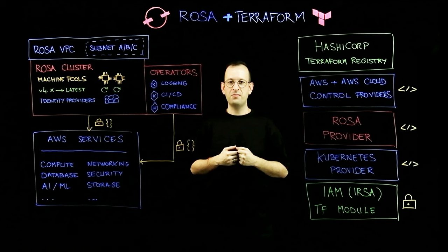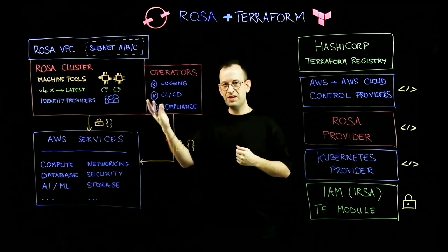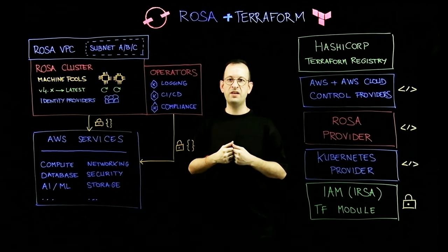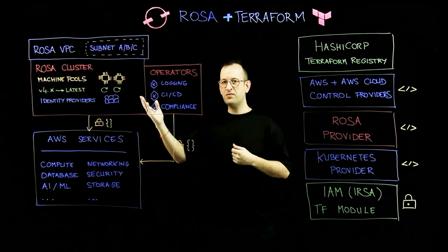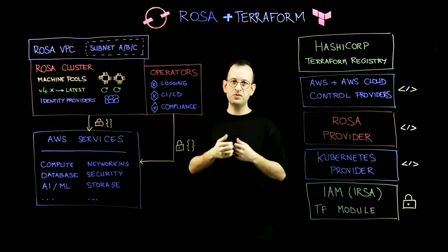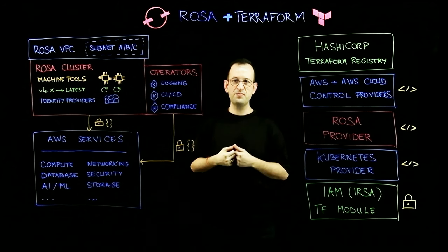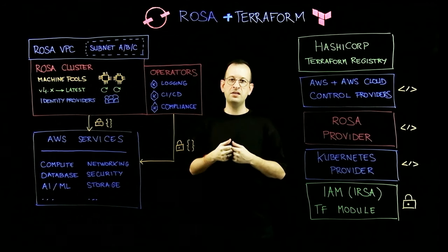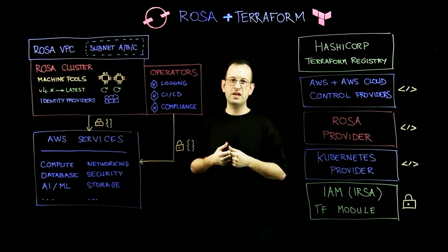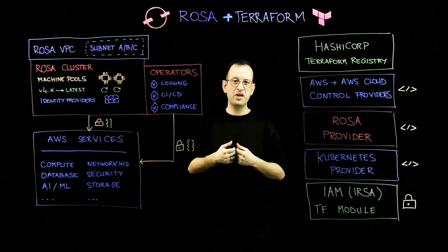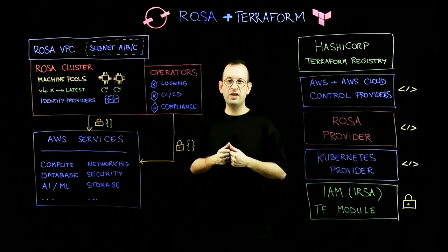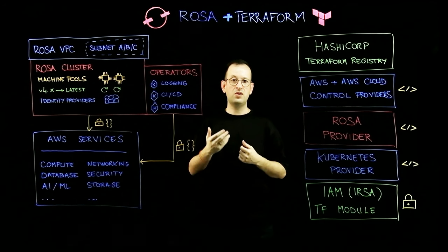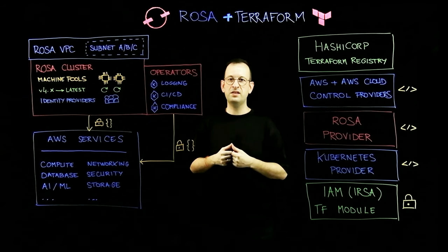From there you can plan for upgrades — for example going from version 4 to the latest version — and you can also bring in identity providers like LDAP-compliant identity providers or OpenID Connect identity providers.